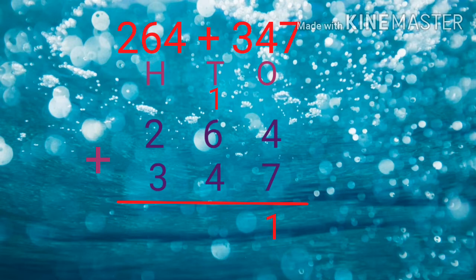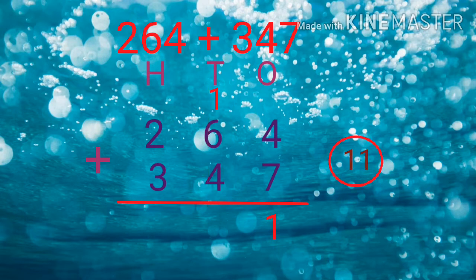Now add the digits in the 10's place. The digits are 1, 6 and 4. Let us first add 6 and 4: keep 6 in mind and 4 in hand, you will get 6 plus 4 equal to 10. Now add 10 with the number 1, so 10 plus 1 will give you 11. Again regroup the number 11 into 10's and 100's. Write 1 in the 10's place and 1 is carried to the 100's place.